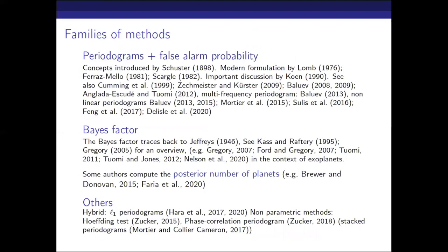Now we are entering the actual families of methods used in the context of radial velocity data. There are, to me, three categories. The first is the category of periodograms plus what we call a false alarm probability. The second category is the Bayes factor. And finally, you have other methods, which are kind of hybrid or non-parametric methods — it doesn't mean they are not interesting, especially the non-parametric methods.